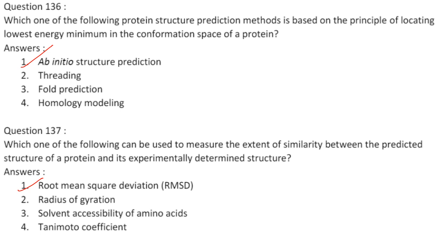To measure the extent of similarity between a predicted protein structure and its experimentally determined structure, root mean square deviation (RMSD) between corresponding atoms of two protein chains is used. The smaller the RMSD, the more similar the two structures. Answer is option 1, root mean square deviation.